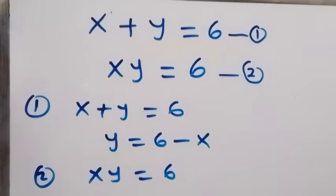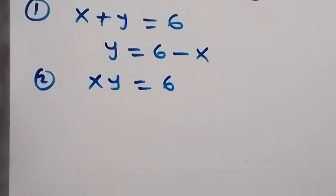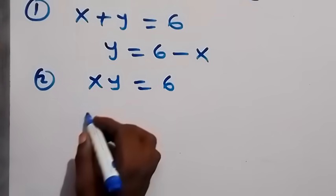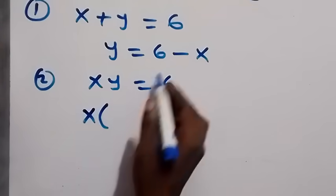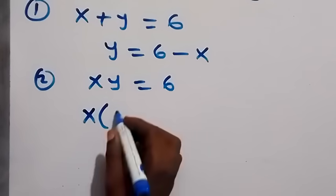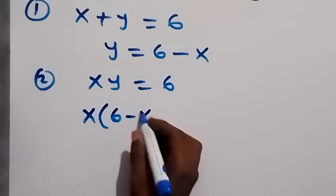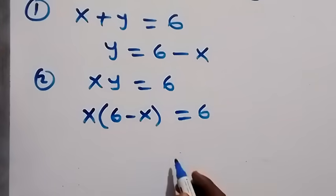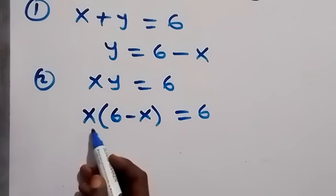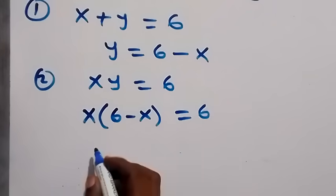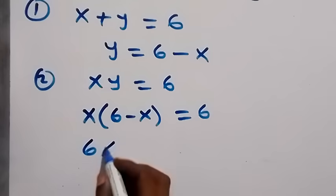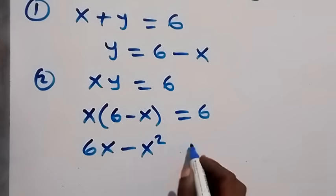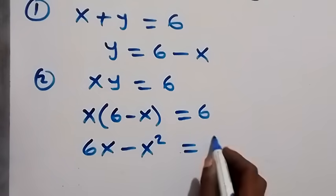From equation two we have x times y equals six. Let's substitute the value of y into equation two. Equation two becomes x multiplied by (6 minus x) equals six. Opening the bracket, we have six x minus x squared equals six.